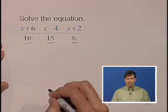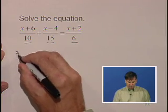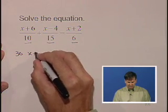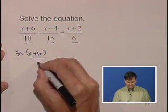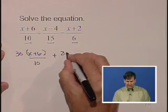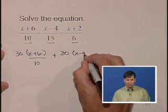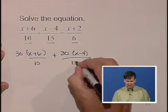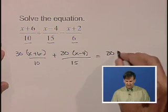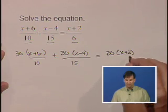So we are going to multiply every term by 30. 30 times x plus 6 divided by 10 plus 30 times x minus 4 divided by 15 is equal to 30 times x plus 2 divided by 6.